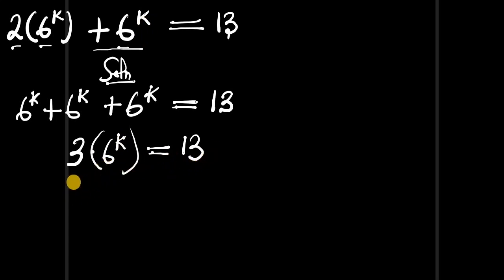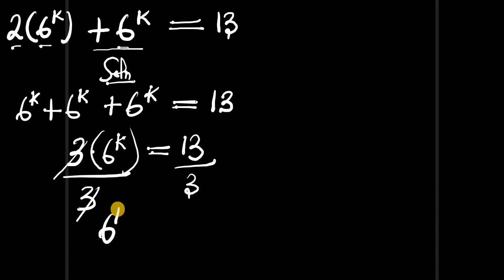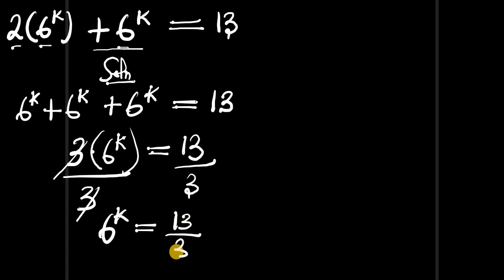So what can we do? We can divide both parts of this equation by 3. This cancels, and we have 6^k equals 13 divided by 3.